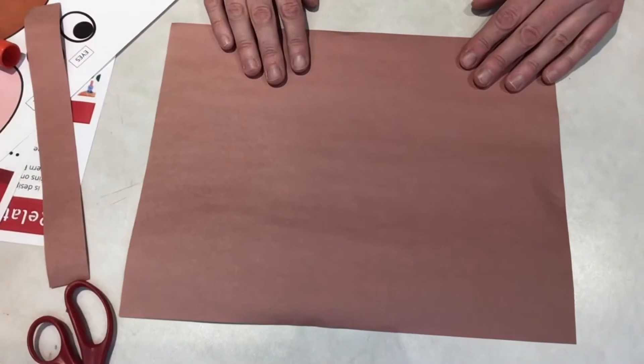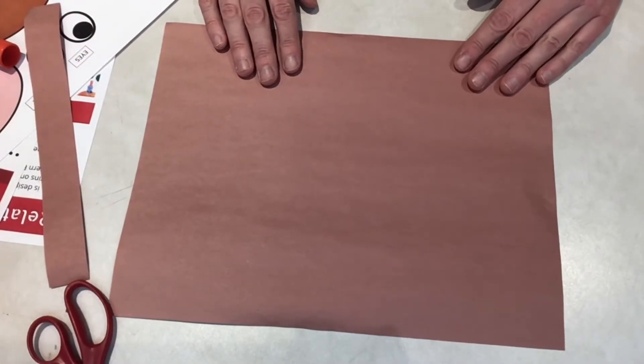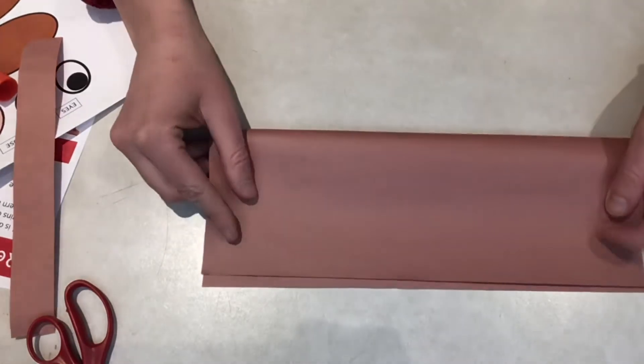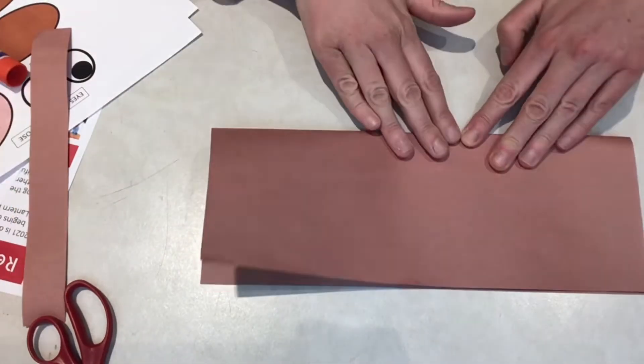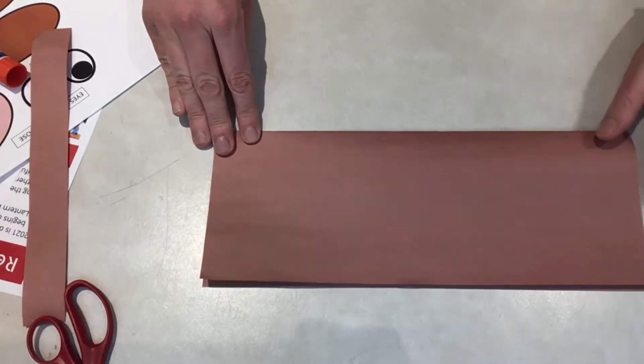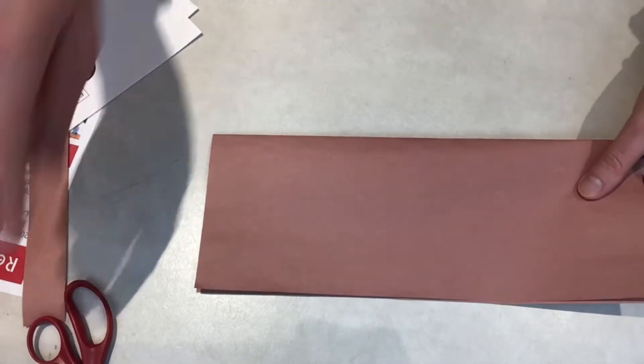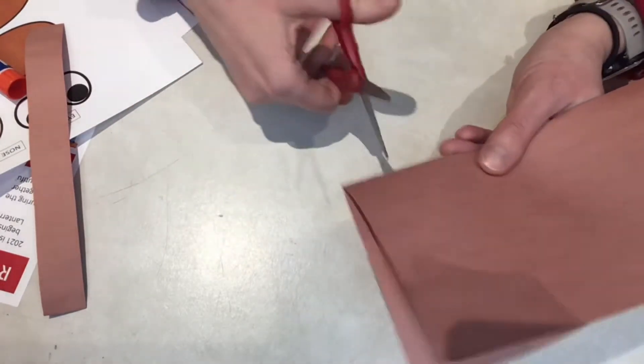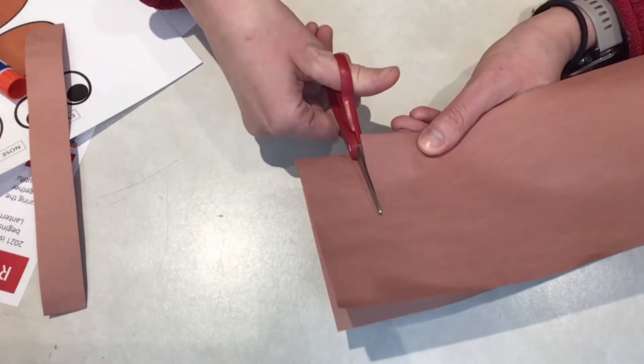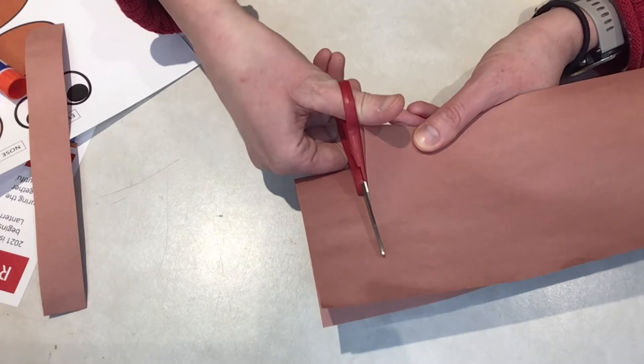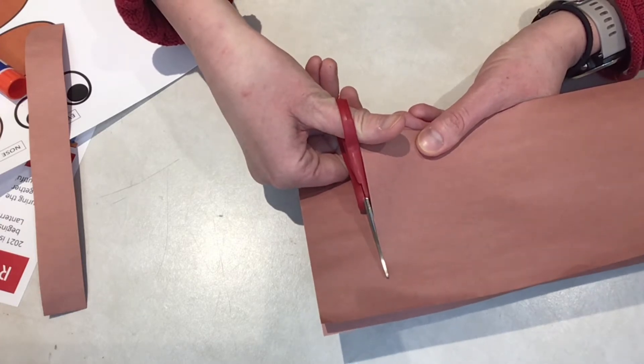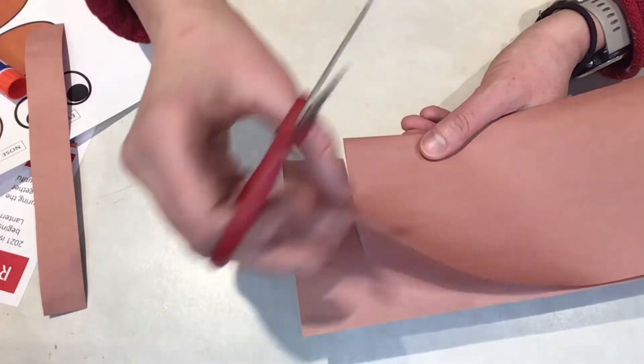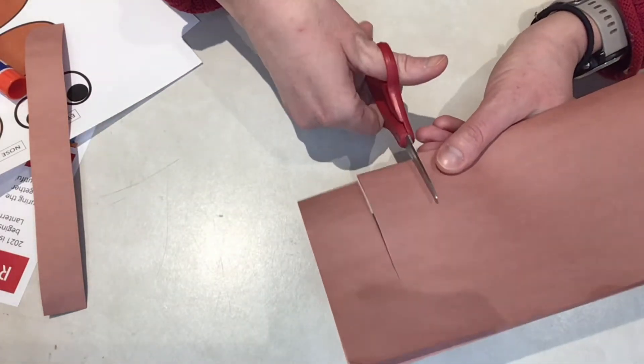So first, you're going to want to put your paper the long way and then fold up like this. Then you'll take your scissors and you'll cut strips about one inch apart and all the way to about half an inch away from the end of the paper. This will keep the paper together so your lantern will have a top and bottom.